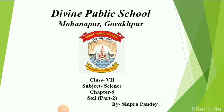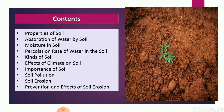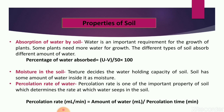Hello students, good morning. We are studying Chapter 9, that is soil — this is the second part of this chapter. In this part we will study about properties of soil, including absorption of water by soil, moisture in soil, and percolation rate of water in the soil. Then we will study kinds of soil, effects of climate on soil, importance of soil, soil pollution, soil erosion, and finally prevention of soil erosion.